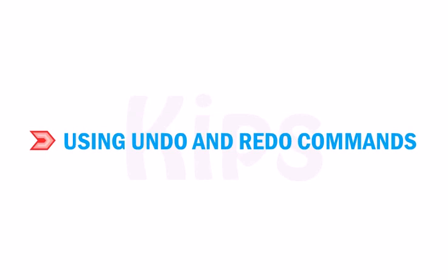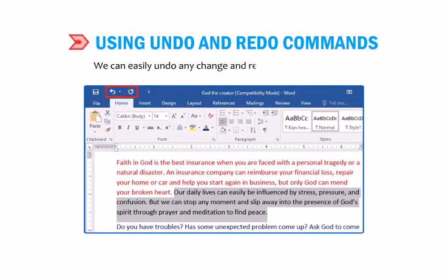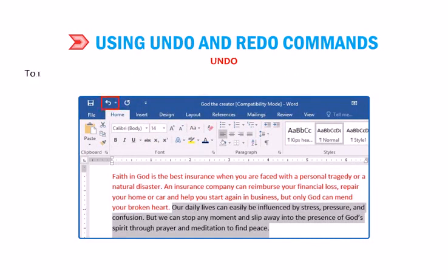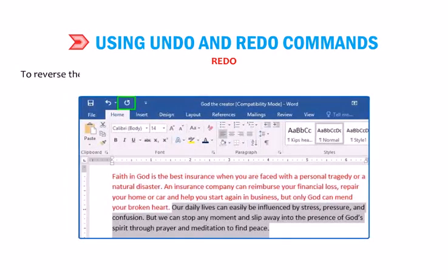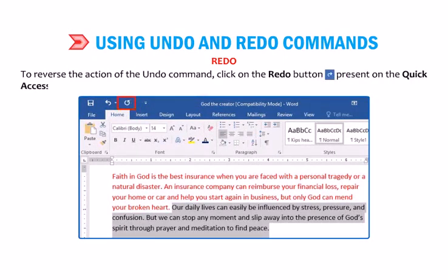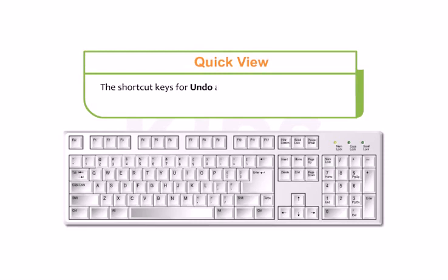Let us learn how to use Undo and Redo commands. Word 2016 keeps track of all changes made in a document. Undo reverses the effect of the last command — click the Undo button on the Quick Access Toolbar to reverse one or more actions. Redo reverses the action of the Undo command — click the Redo button on the Quick Access Toolbar. Similarly, in Word 2013, you can find Undo and Redo on the Quick Access Toolbar. Shortcut keys: Ctrl+Z for Undo and Ctrl+Y for Redo.